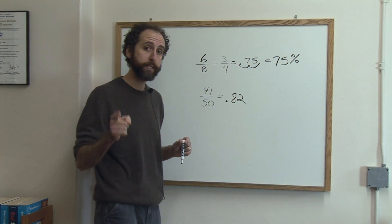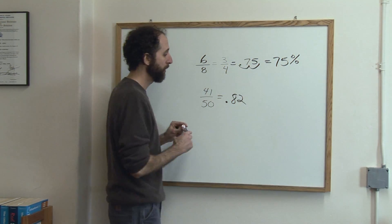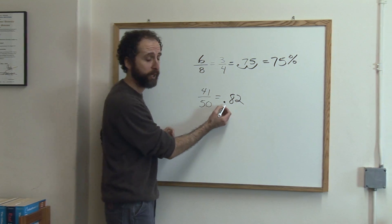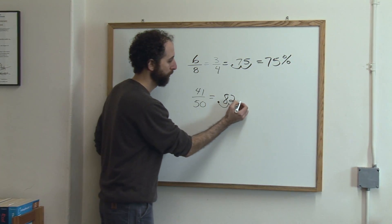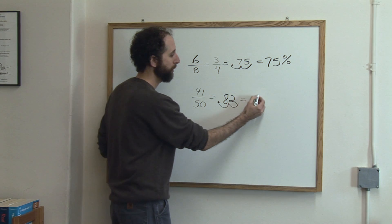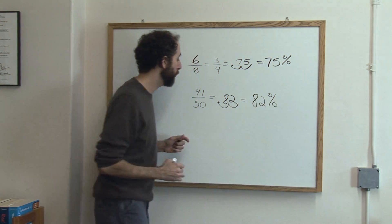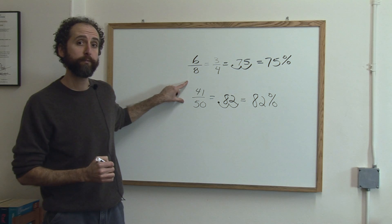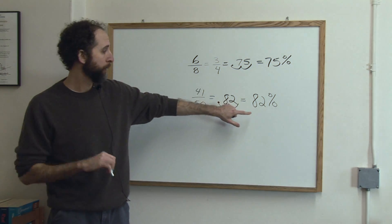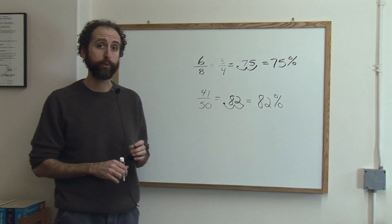That's a decimal. To turn that decimal into a percent, you move the decimal point over two places - 1, 2. So 0.82 becomes 82%. If your quiz grade was 41 out of 50, your percentage is 82%. Thank you.